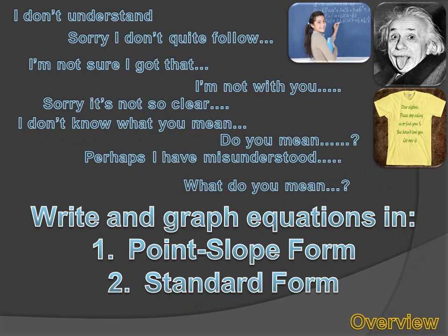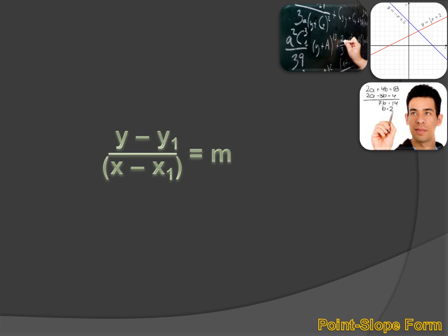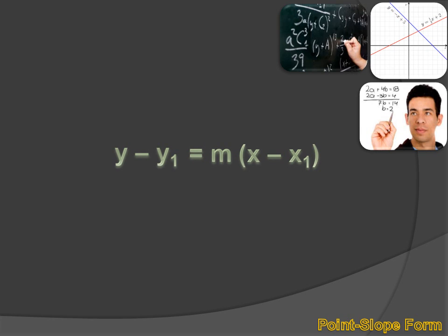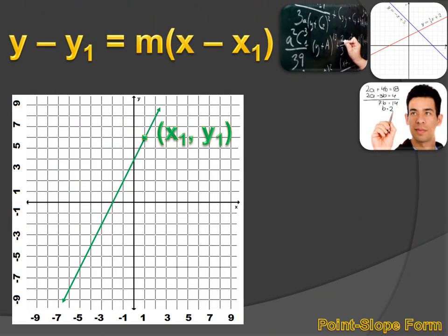We're going to talk about point-slope form and standard form. Let's start with point-slope form. Hopefully you recognize the equation on the screen: Y minus Y1 divided by X minus X1 equals M, or the slope — the change in the Y values divided by the change in the X values equals the slope. We can multiply both sides by X minus X1, and the equation becomes Y minus Y1 equals M times X minus X1. And that is point-slope form.